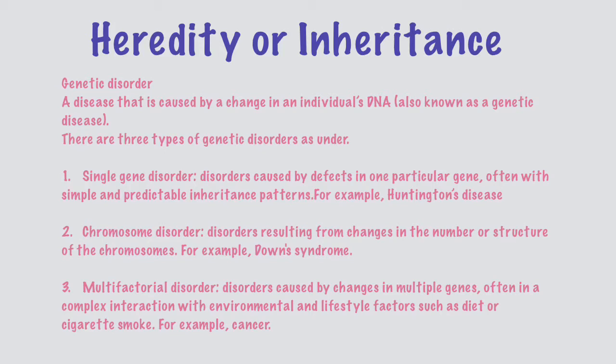There are three kinds of genetic disorders: single gene disorder, chromosome disorder, and multifactor disorder. Single gene disorder is caused by defects in one particular gene, often with simple and predictable inheritance patterns. Chromosome disorder results from changes in the number or structure of chromosomes. Multifactor disorders are caused by changes in multiple genes, often in complex interaction with environmental and lifestyle factors such as diet or cigarette smoke.